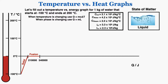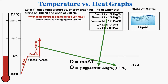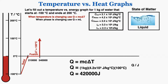Once the water is completely done changing phase, it exists as a liquid and heat goes back into changing the temperature. Using Q = mcΔT with a temperature change of 100°C and specific heat of water 4.2 × 10³ J/kg·°C, the additional heat required is 420,000 joules. We were already at 540,000 joules, so altogether we reach 960,000 joules. This line represents the water in its liquid phase, and I could look at any point along it to find exactly how much energy the water had.